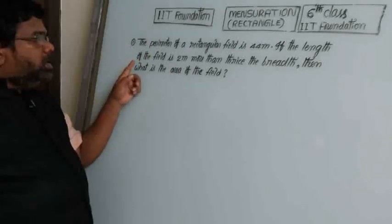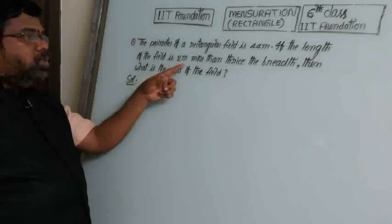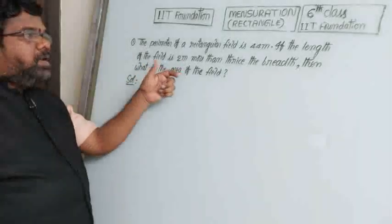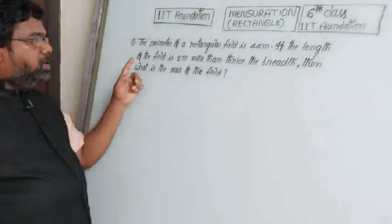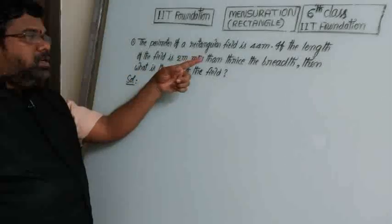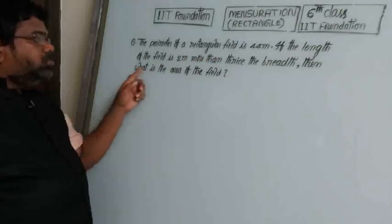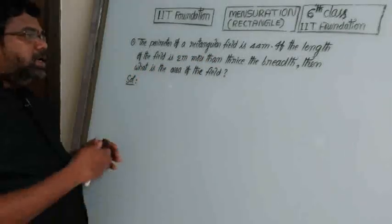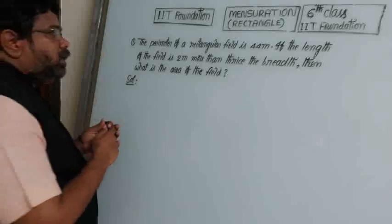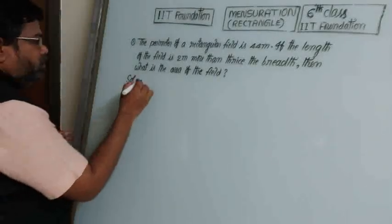If the length of the field is 2 meters more than thrice the breadth, then what is the area of the rectangle?